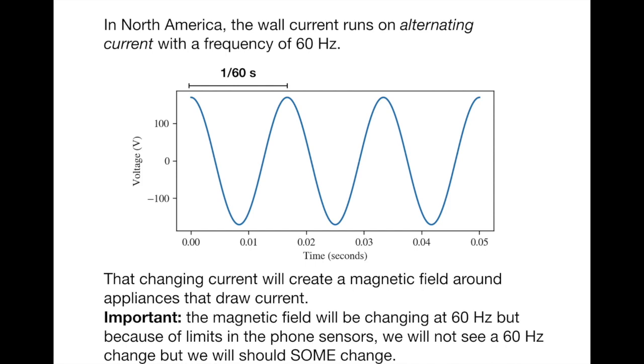This changing current will actually create a magnetic field around appliances that are drawing that current, and that magnetic field will be changing also with 60 hertz. Important to note in this measurement, we will not be able to measure a 60 hertz oscillation because of limitations in your phone sensors, but we will be seeing the change. Specifically, we'll be seeing the amplitude of the magnetic field changing.